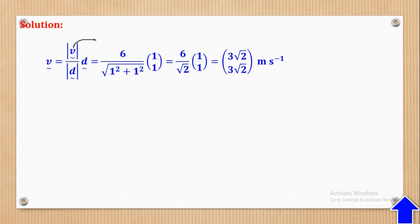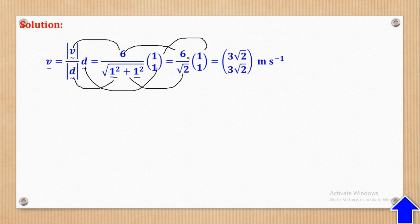To convert from magnitude to vector, we use the formula: magnitude of the velocity over magnitude of the direction vector, multiplied by the direction vector. The magnitude of the velocity was 6 m/s, and the direction vector was i + j, which is (1, 1), so the magnitude is √(1² + 1²) = √2. So 6/√2 times (1, 1) gives 3√2i + 3√2j. The √2 in the denominator is removed by rationalizing — multiplying by √2 on both numerator and denominator.